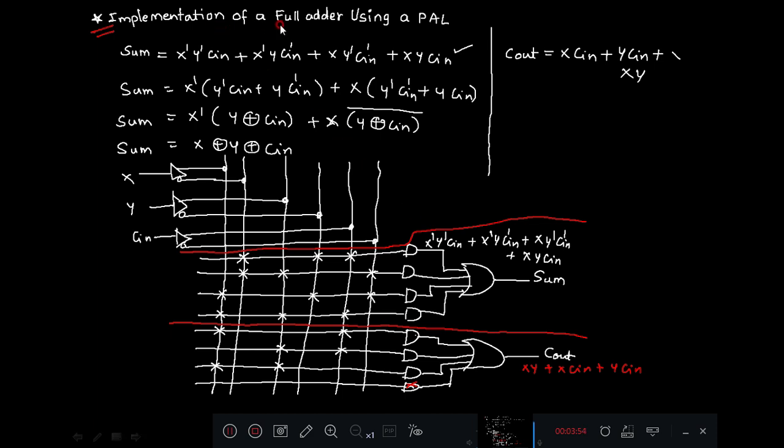Implementation of a full adder using PAL. We know that the sum expression for full adder is X XOR Y XOR CN in terms of XOR gate. But we want for PAL realization in terms of sum of product terms which involves NOT, AND, and OR. So if you do the reverse process, this can be written as X XOR Y XOR CN.